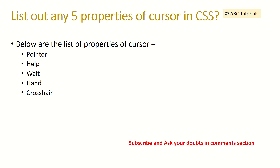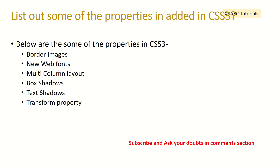List out five properties of cursors in CSS — essentially, what are the different cursor types? We can mention: pointer, help, wait, hand, and crosshair.